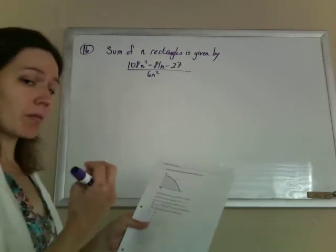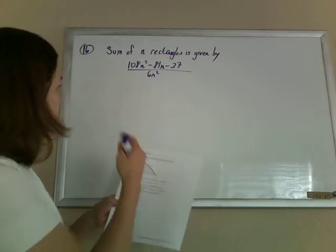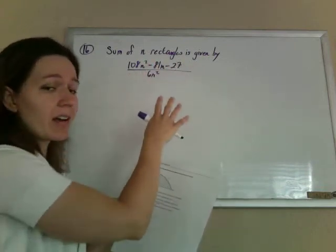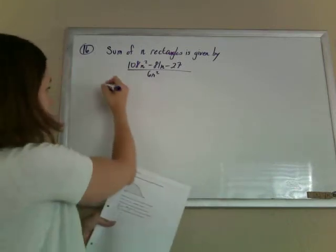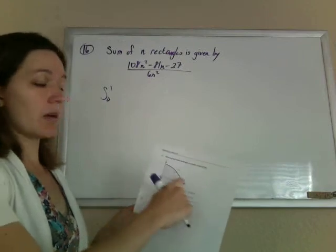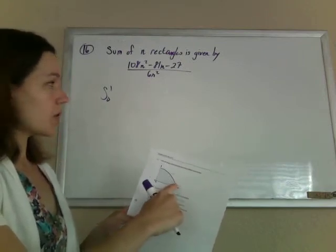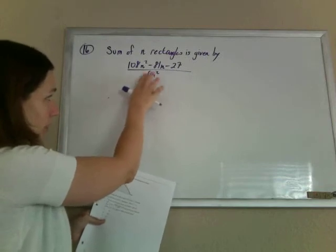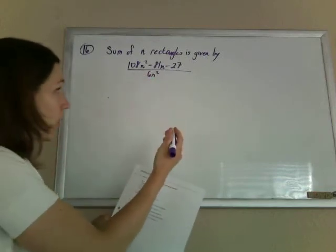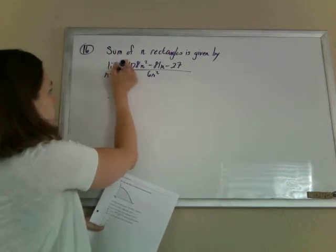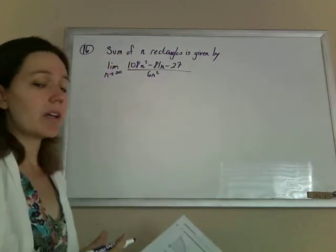If you pick out the main part of this, they've written that the sum of n rectangles is given by that. And so the integral, right, is the sum of an infinite number of rectangles. So if they've already set up this sum for you, all you have to do is find the sum of an infinite number of rectangles. Just let n go to infinity.